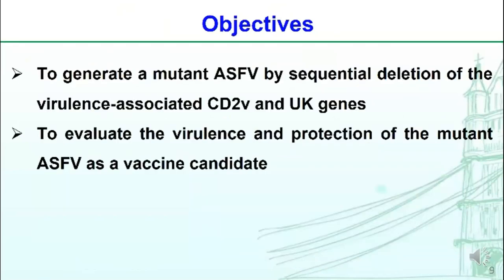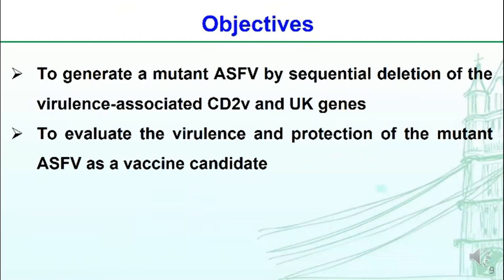The objectives of this study were to generate a mutant virus by sequential deletion of the virulence-associated CD2V and UK genes, and to evaluate the virulence and protection of the mutant virus as a vaccine candidate. This is the research roadmap: firstly to generate a double gene-deleted virus by homologous recombination, and then to identify the virus in vitro and in vivo.